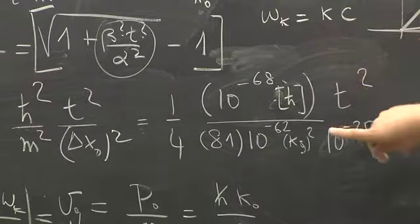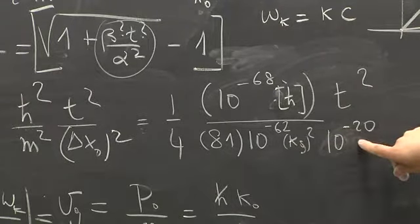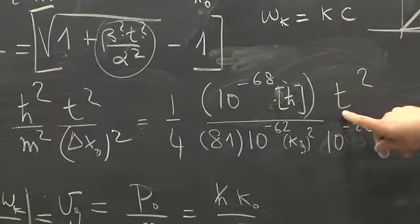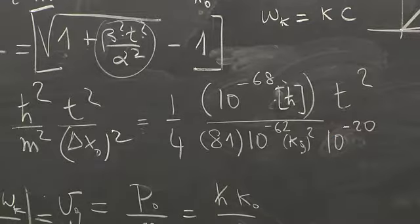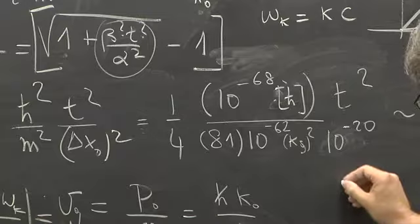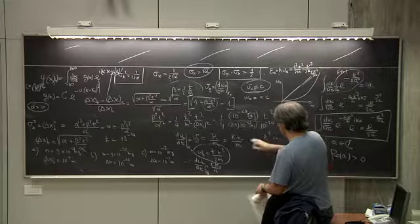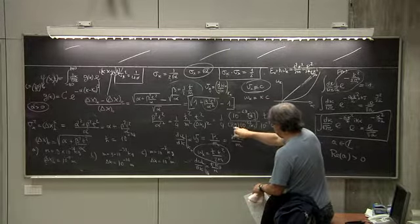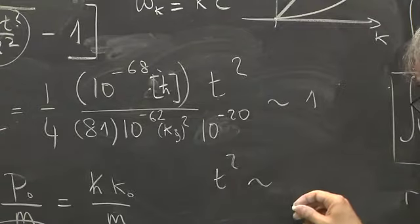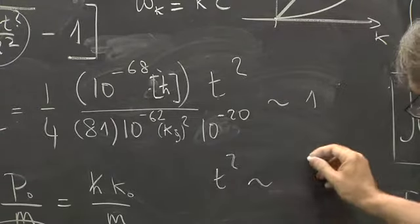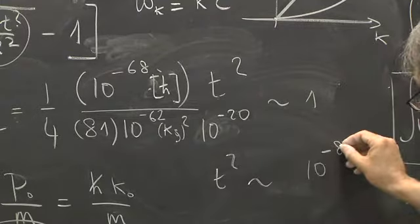This is the Schrödinger equation for a particle in vacuum — no potential. We'll show this next time. In fact, this is the most general solution: a superposition of plane waves with an arbitrary g of k, not necessarily Gaussian. The Gaussian calculation was done because we could carry the algebra to the end, but in principle any g of k is allowed and is a solution.